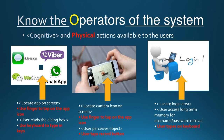We now understand the limitations of the system we are using by identifying the operators, such as the app using physical gestures, locating using cognitive processes, or typing on a keyboard or tapping on the screen of the system. These are all operators that can be performed on the system.